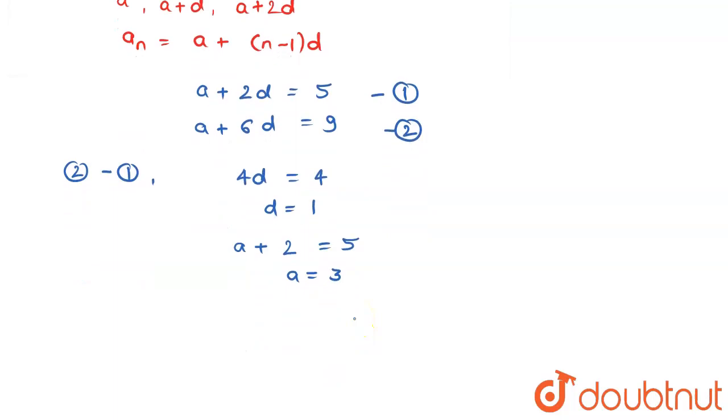Now for this particular AP, you have the value of the first term and the common difference. You can write down the AP: 3, then a+d which is 4, a+2d which is 5, and so on. This is our AP and this is our final solution.